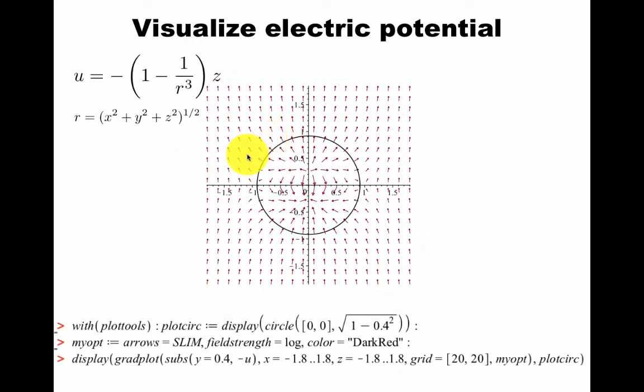The equipotential lines, the lines of constant potential, will be, for example, this circle here. I've picked some value here of Y.